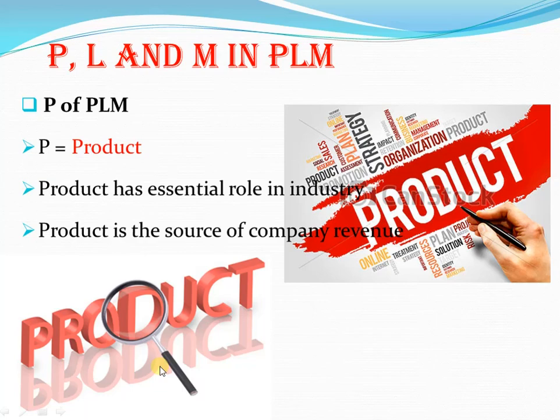Now let's see what each letter in PLM means. The P stands for Product. Product is the main theme in the industry — everything is governed around the product and process. The product is important whether it's a chair, beverage, an aircraft, or any mobile system. The product is the source of company revenue; without the product, the company does not exist and has no customers.